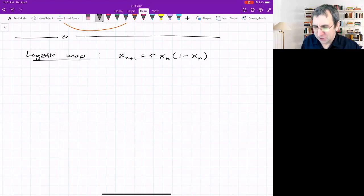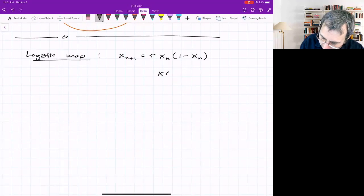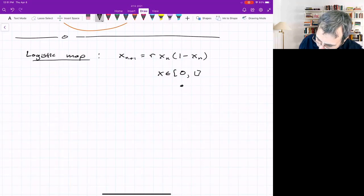This was created to be a discrete population dynamics model, similar to the logistic equation. If you remember the logistic equation, that was a differential equation with a carrying capacity. Here, the space of X we're normalizing so it just goes from 0 to 1.